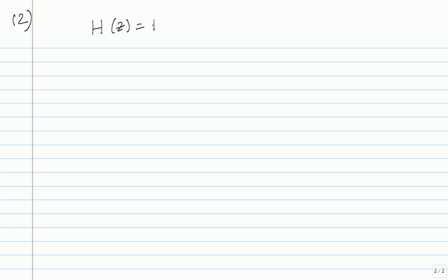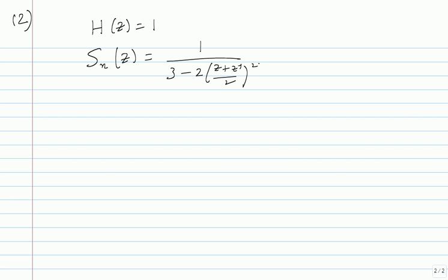The second question also surprised me a little bit. I thought it was a direct formula application for the standard form. H of Z is given as 1, so any term involving H will be 1. Sn(Z) was given as 1 by (3 minus 2 times (Z + Z inverse)/2). Many people wrote this, but then there was amazing discomfort in factoring it. Out of 40 people, only 5 people wrote one root of this — I was quite surprised. It's a quadratic equation.